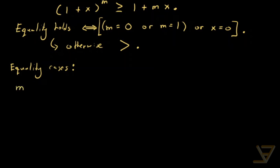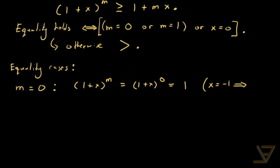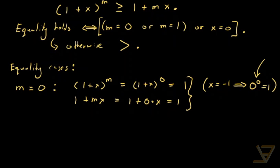The first case is m equals zero. We have one plus x to the power of m, which equals one plus x to the power of zero, which equals one. By the way, if x equals negative one, we use the convention that zero to the power of zero equals one. This convention allows us to make Bernoulli's inequality true. Computing the other side: one plus mx equals one plus zero times x, which equals one. So we do have equality in this case.